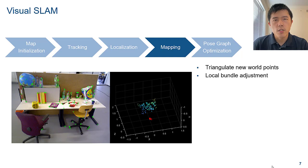While localizing the camera, you can map the environment simultaneously. This is done by using triangulation to create new 3D world points. Same as before, you can use bundle adjustment to refine the map.